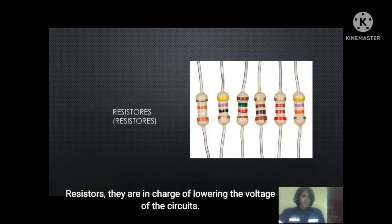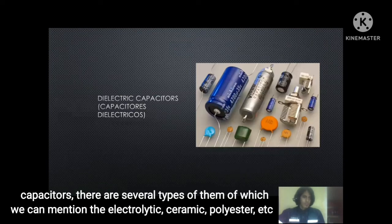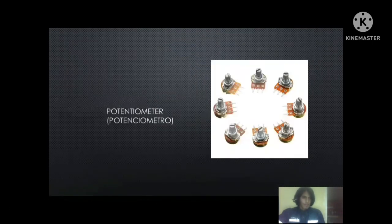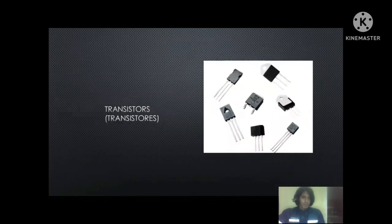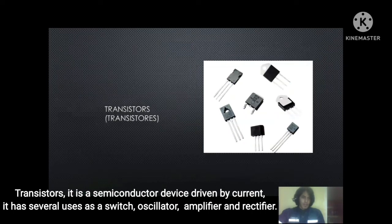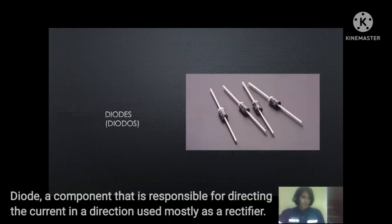Resistors: responsible for lowering the voltage of the circuit. Capacitors: there are several types, including electronic ceramic, polyester, and electrolytic. Potentiometer: a variable resistor that regulates the passage of current. Transistors: a semiconductor device driven by current, with uses as a switch, oscillator, amplifier, and rectifier. Diode: a component that directs current in one direction, mainly used as a rectifier.